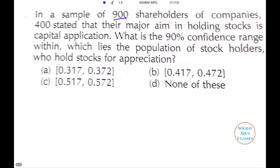Let us read the first question. In a sample of 900 shareholders of a company, 400 stated that their major aim in holding stock is capital appreciation. What is the 90% confidence range within which lies the population of stockholders who hold stock for appreciation?